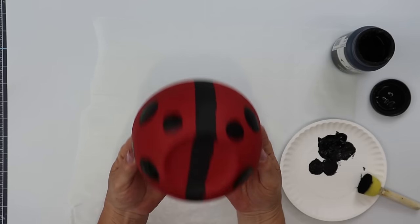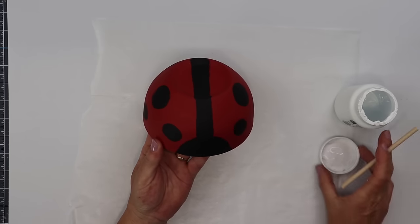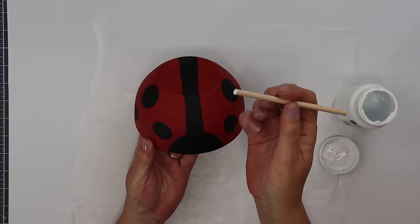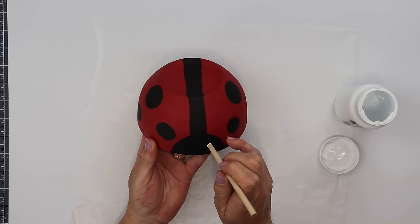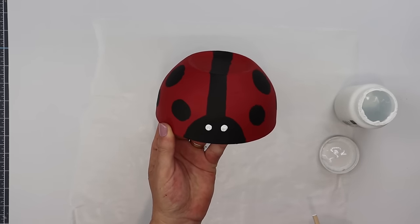Then we're going to take the end of a wooden dowel, the flat end, dip that into our white paint and then create two small white circles for the eyes. You can also use the end of a paint brush for this.